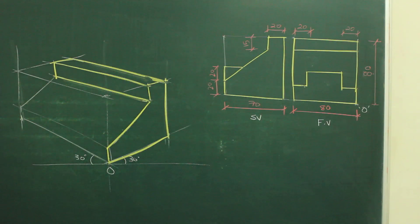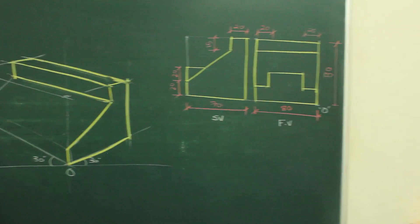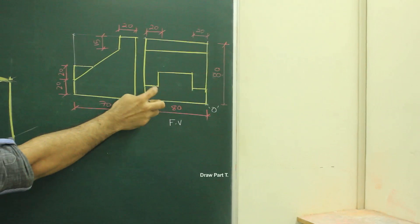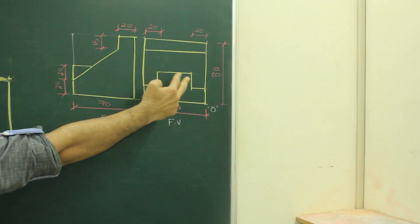Now after this, I need to pay attention to front view. Now if I see front view, they have given this T slot, T part, which is 20, 40, 20 and height of 20.